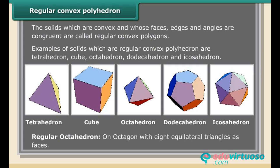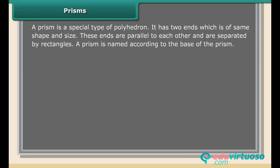Regular octahedron: An octagon with eight equilateral triangles as faces. Prism: A prism is a special type of polyhedron. It has two ends which are of the same shape and size. These ends are parallel to each other and are separated by rectangles. A prism is named according to the base of the prism.